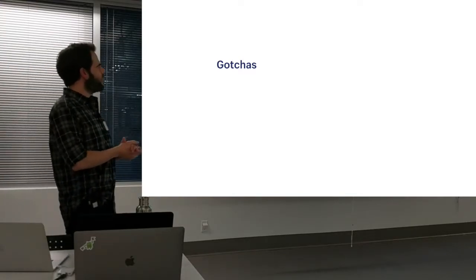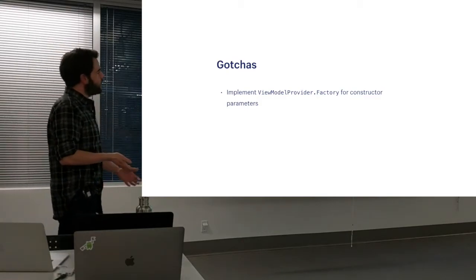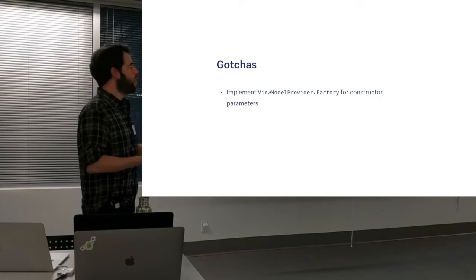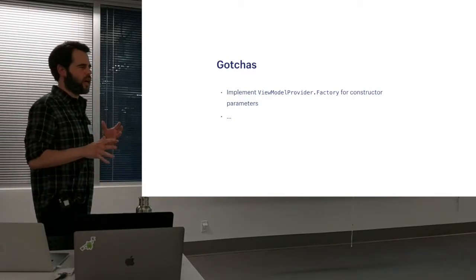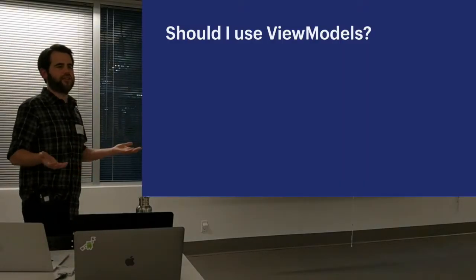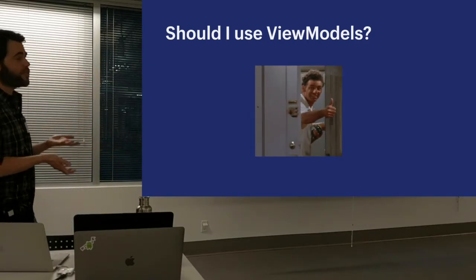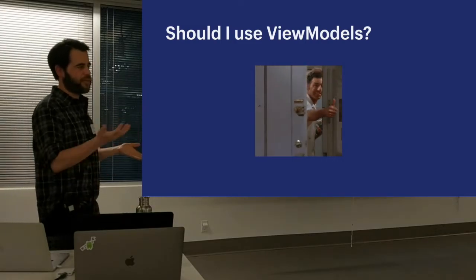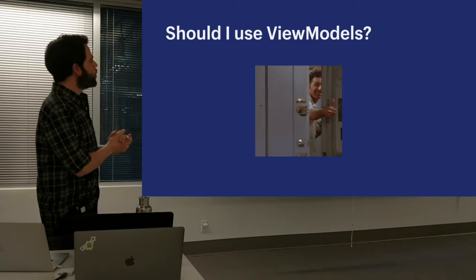Some gotchas — things to be aware of: if you need constructor parameters, you want to implement the ViewModelProvider.Factory interface. That was really the only gotcha I found with ViewModels. On the whole, should you use ViewModels? I would say yeah, go for it. They solve a lot of problems and have a lot of benefits. It's a nice way to have a platform-recommended architecture — we've never had that before, and ViewModels obviously go well with MVVM.